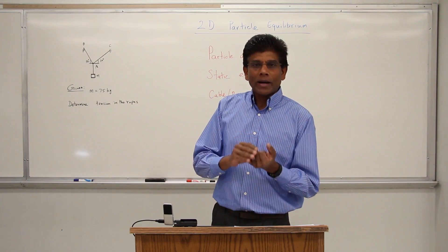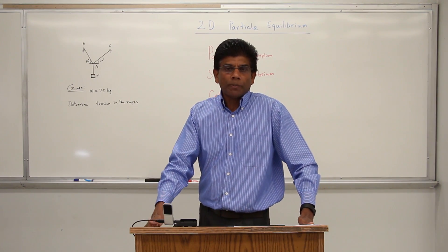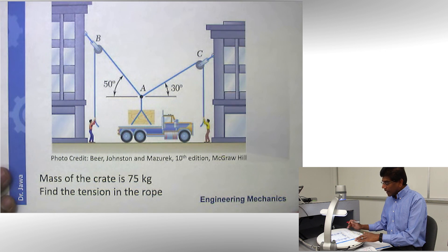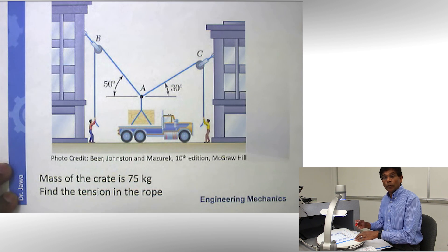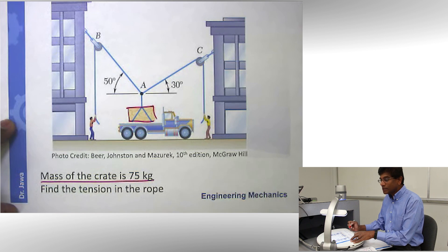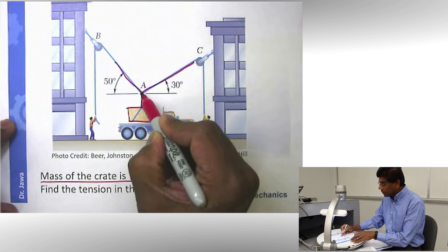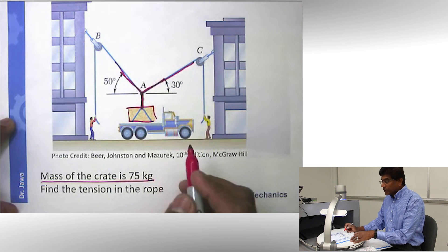With this in mind — understanding what a particle is and the concept of equilibrium — let us turn our attention to a particular problem taken from a popular textbook, Baron Johnston. Here is a crate and the mass of the crate is given. Two guys are trying to lift it using a cable and pulley system, and our task is to find the tension in cables AC and AB.